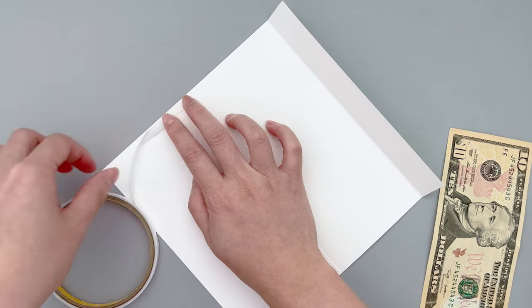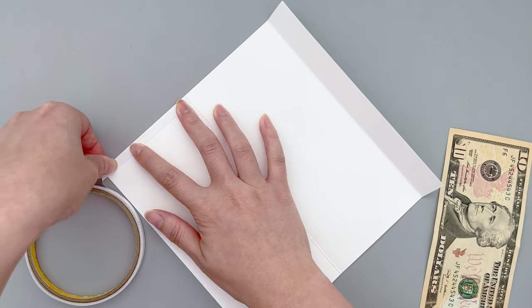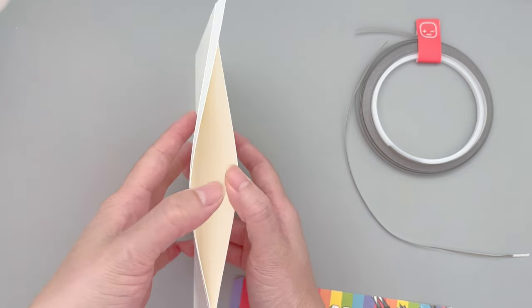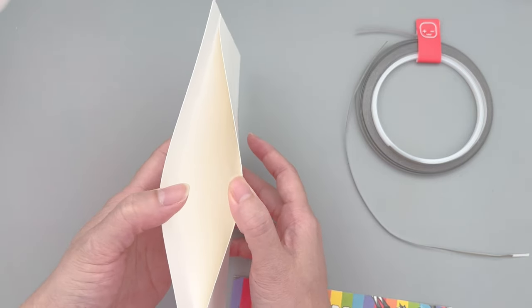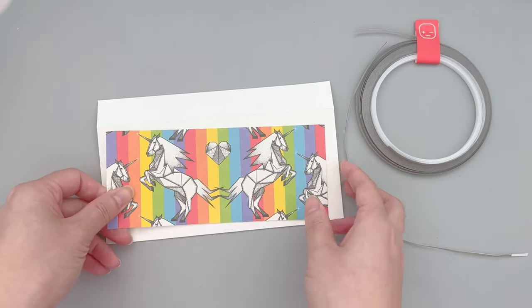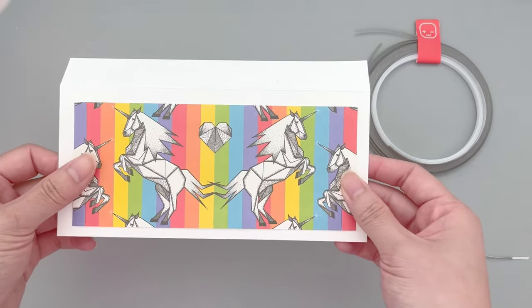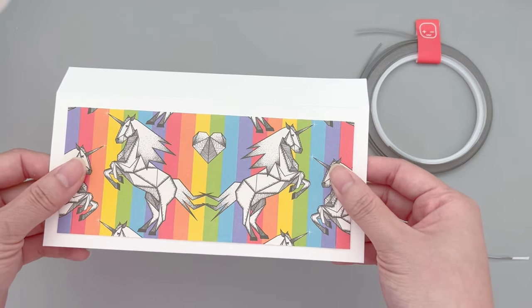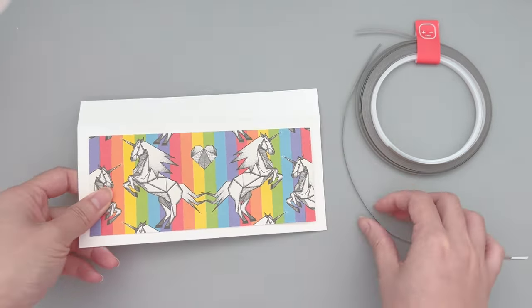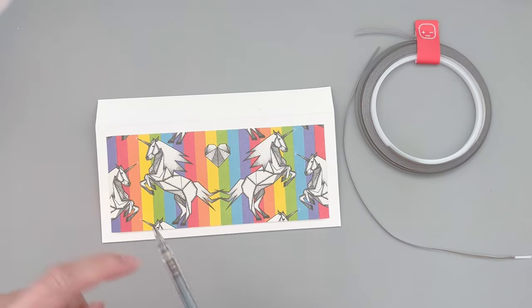After that, you can just use double-sided tape to adhere the edges of the envelope and this is what it looks like after it's finished. Now the base of the project is basically complete and you can totally stop here if you want to, but I love unicorns and rainbows and I always want to add extra sparkle and shine when I'm creating with them, so I decided to turn it into a light-up card today.